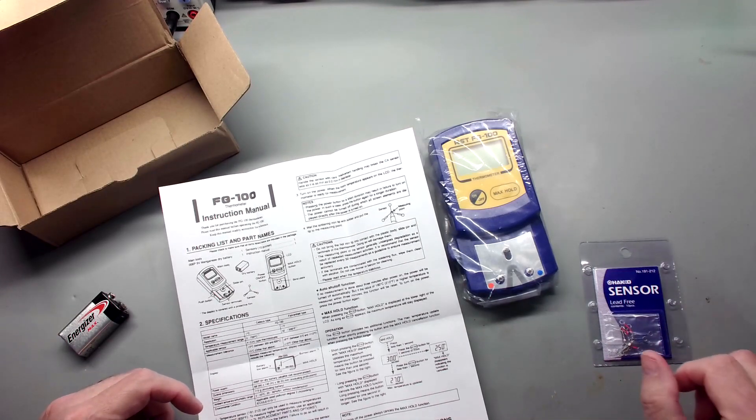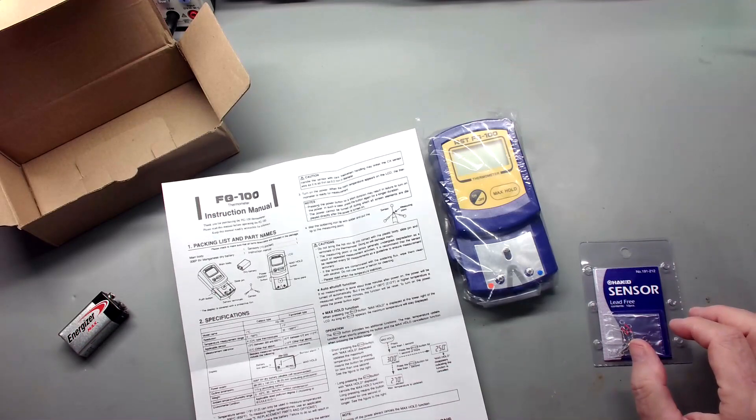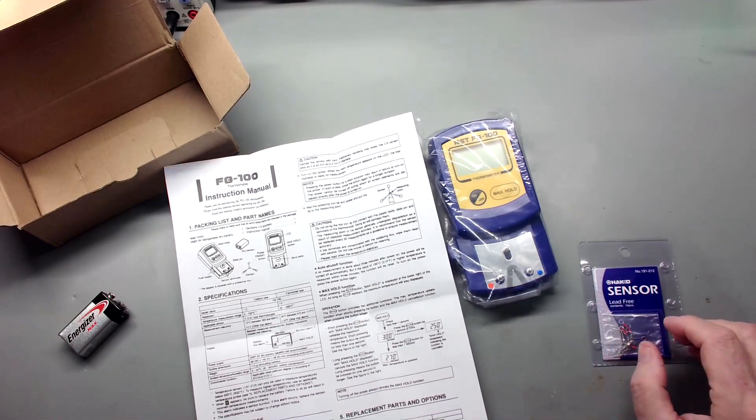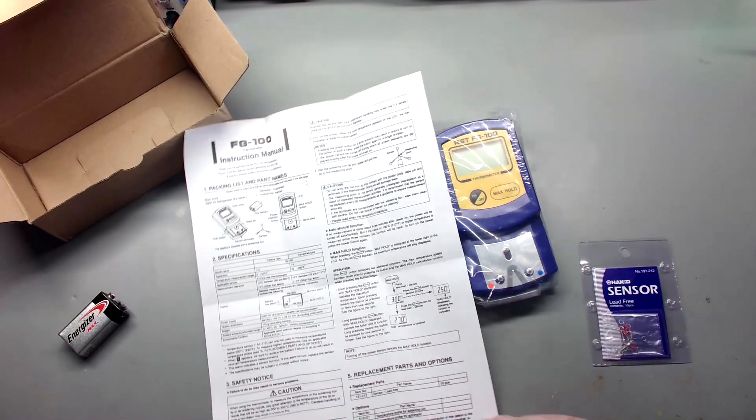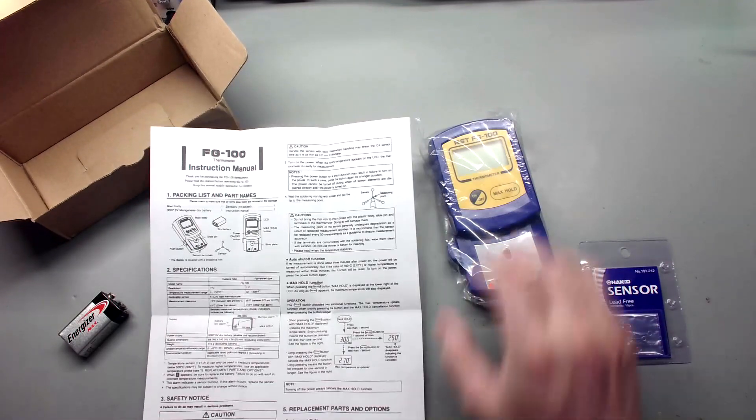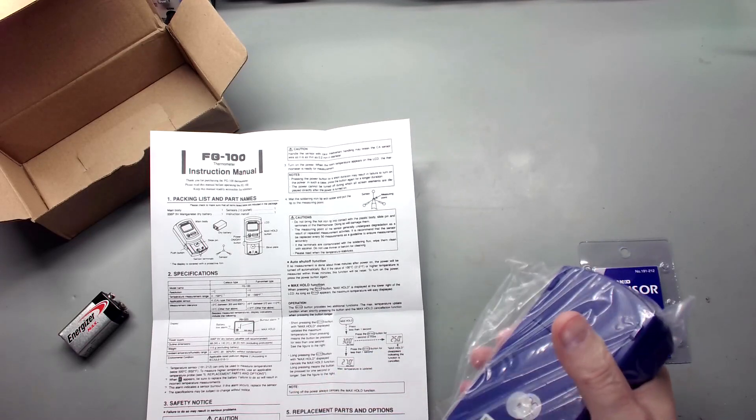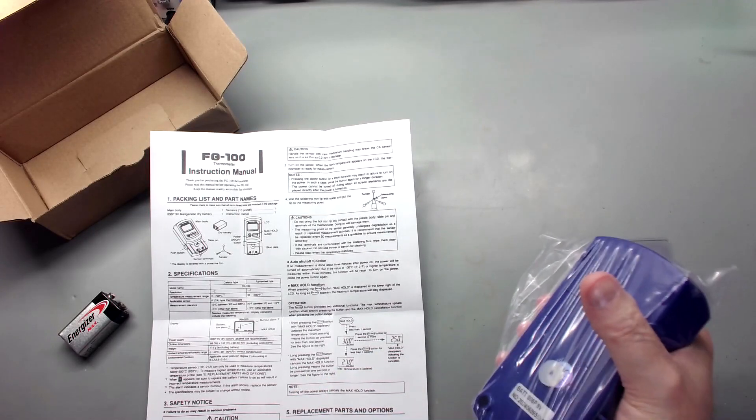When the B emblem shows up, you replace the battery. The alarm indicates the sensor is burnt out, you need to replace it. Be careful, don't burn yourself, it says. Open the battery cover, insert the battery. Let's get this rascal open and see what we think, how it works.